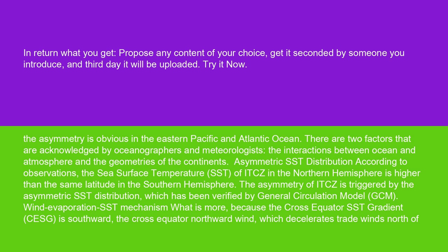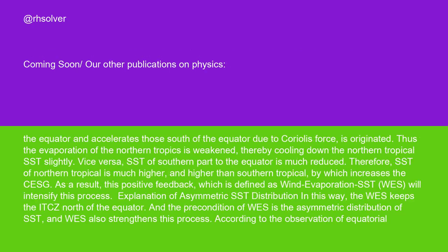Wind-evaporation-SST mechanism: because the cross-equator SST gradient, CSG, is southward, the cross-equator northward wind is originated, which decelerates trade winds north of the equator and accelerates those south of the equator due to Coriolis force. Thus, the evaporation of the northern tropics is weakened, thereby cooling down the northern tropical SST slightly. Vice versa, SST of the southern part of the equator is much reduced.